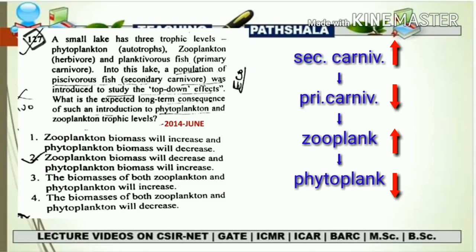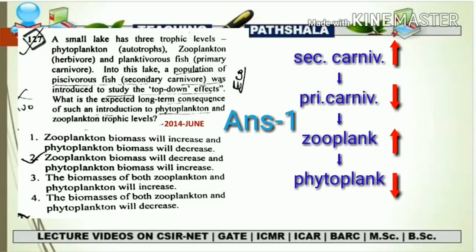With a secondary carnivore present, it feeds on the primary carnivore, causing a decline in primary carnivore population. With fewer primary carnivores, zooplankton increases. With more zooplankton, feeding on phytoplankton increases, causing phytoplankton to decline. Evaluating the options: Option 1 — zooplankton biomass increases and phytoplankton biomass decreases — is correct. Option 2 — zooplankton decreases and phytoplankton increases — is wrong. Option 3 — both increase — is wrong (that describes bottom-up). Option 4 — both decrease — is also wrong. The correct answer is Option 1.